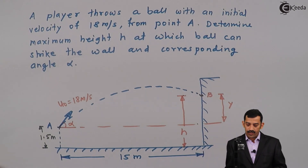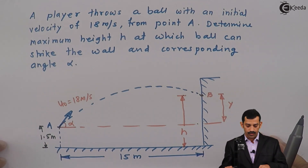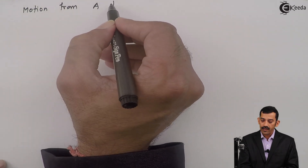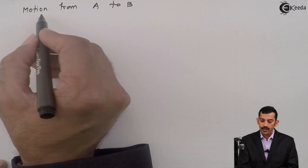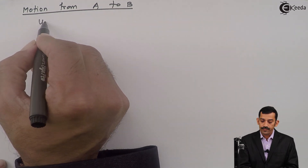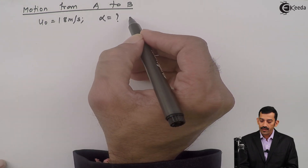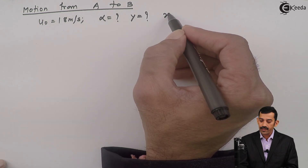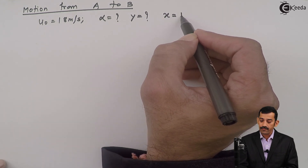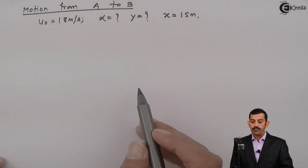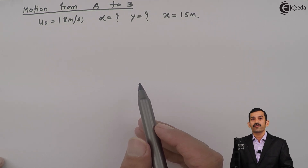Considering the motion from A to B: the initial velocity u₀ is 18 meters per second, angle alpha is unknown, and y is also unknown. But the horizontal distance x is known as 15 meters.